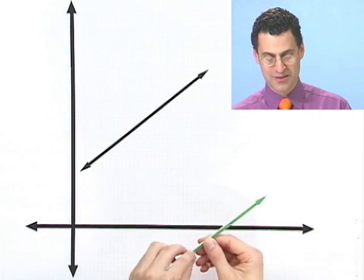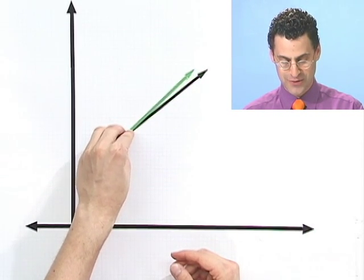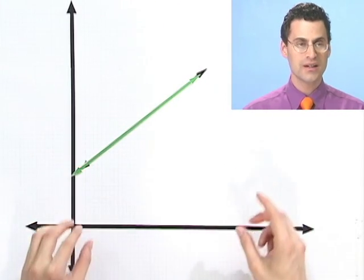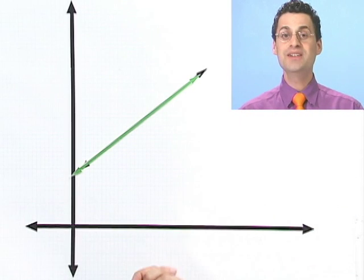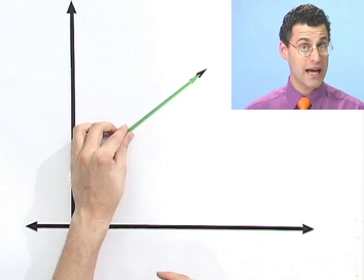But what if it turns out those two lines are identical? You ever think about that? Then, in fact, they intersect everywhere. So there's infinitely many solutions. That's really not that interesting, but it could happen.